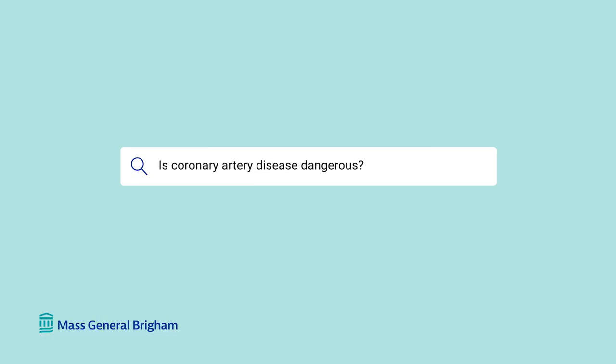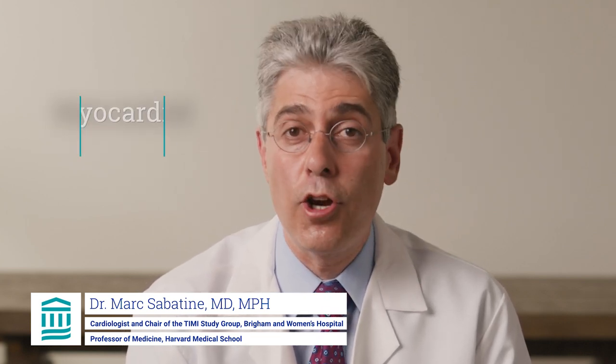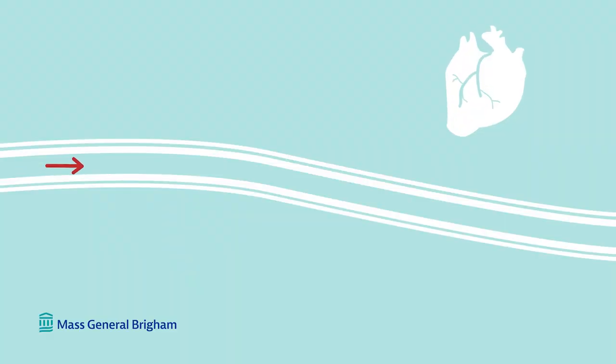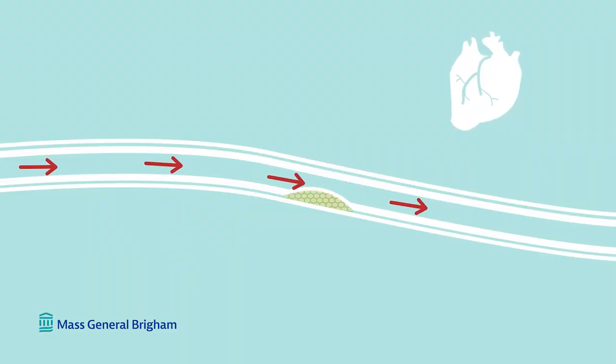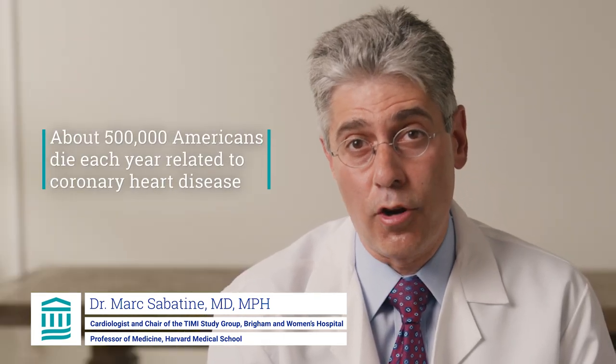Is coronary artery disease dangerous? The most severe manifestation of coronary artery disease is the myocardial infarction, or in other words, a heart attack. In these cases, the plaque ruptures, and that atherosclerotic gruel is exposed to the blood flowing past it, and it actually causes the blood to clot. This clot inside the coronary artery then suddenly decreases the blood flow down the vessel, starving the heart muscle of the oxygen and nutrients that it needs, and the heart cells can then start to die. This is a medical emergency that really warrants immediate medical attention. About half a million Americans die each year related to coronary heart disease.